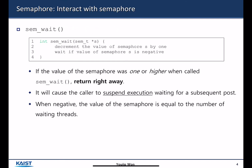sem_wait accepts an address to the semaphore and decrements the value of the semaphore s by one. It waits if the value of the semaphore becomes negative. If the value was one or higher when sem_wait is called, the caller returns immediately. If the semaphore value was zero or less, sem_wait causes the caller to suspend execution waiting for a subsequent post operation. When negative, the absolute value of the semaphore equals the number of waiting threads.